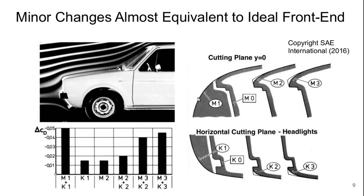If we go to M2 and K2, those tiny changes give us a little benefit. But what's interesting is if we go to M3 plus K3, where we still haven't really changed the geometry much, we're able to recover about 90% of the drag reduction that we could with the ideal front end.